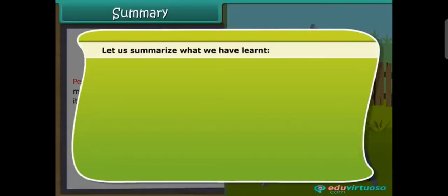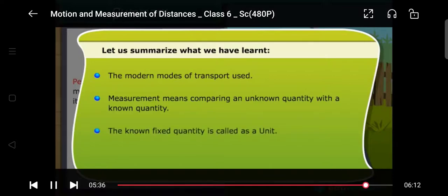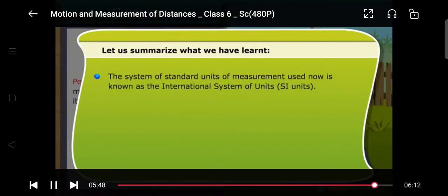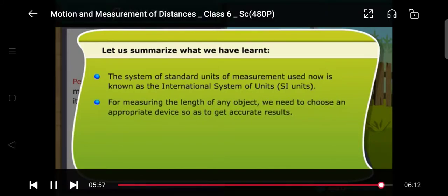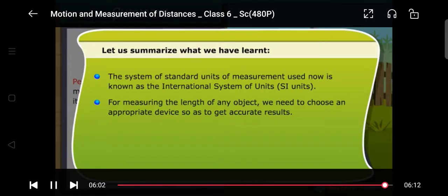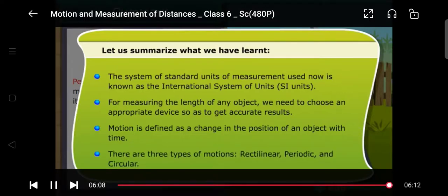Summary — let us summarize what we have learned: the modern modes of transport; measurement means comparing an unknown quantity with the known quantity, and the known fixed quantity is called a unit; in the early days, units of measurements included the length of a foot, the width of a hand, and the distance of a step; the system of standard units now used is known as the International System of Units, or SI units; for measuring the length of any object we need to choose an appropriate device; motion is defined as a change in the position of an object with time; and there are three types of motions — rectilinear, circular, and periodic.